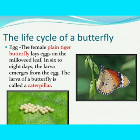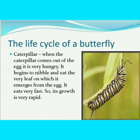Here we take the example of a female plain tiger butterfly. It lays eggs on the milkweed leaf. In six to eight days, the larva emerges from the egg. The larva of a butterfly is called the caterpillar. When the caterpillar comes out of the egg, it is very hungry. It begins to nibble and eat the very leaf on which it emerges from the egg. It eats very fast, so its growth is rapid.